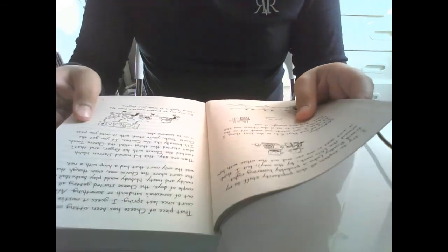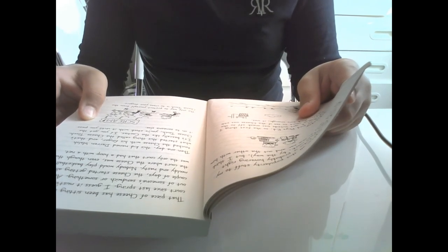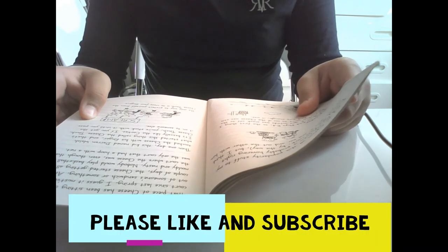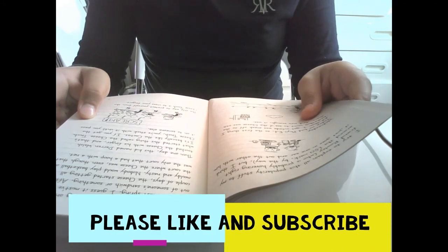Then one day, a kid named Darren Walsh touched the cheese with his finger and that started the whole thing called the cheese touch. It's basically like the cooties, but if you get the cheese touch, you're stuck with it until you pass it on to someone else. The only way to protect yourself from the cheese touch is to cross your fingers.